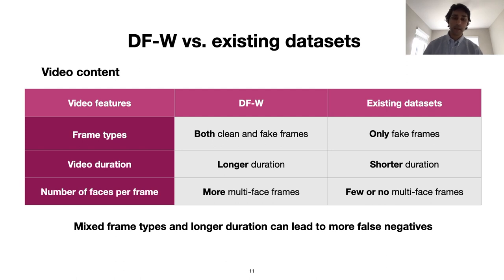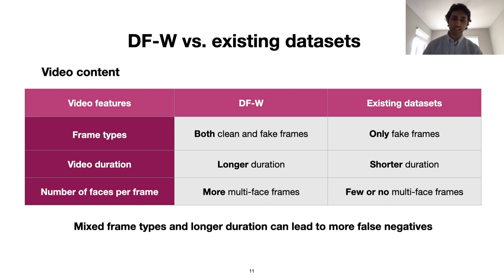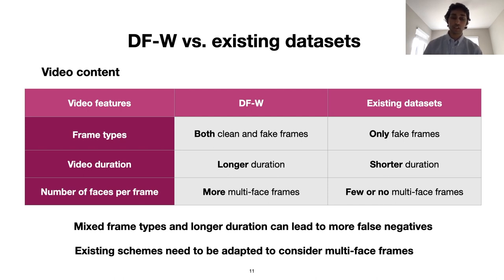The average decision over many clean frames can produce a false negative. Third, we examined the number of faces per frame. We found 26% of DFW videos contain frames with more than a single face, whereas for all existing datasets, over 92% of videos contain frames with only a single face. This is again problematic, as existing detection schemes assume only one face per frame.